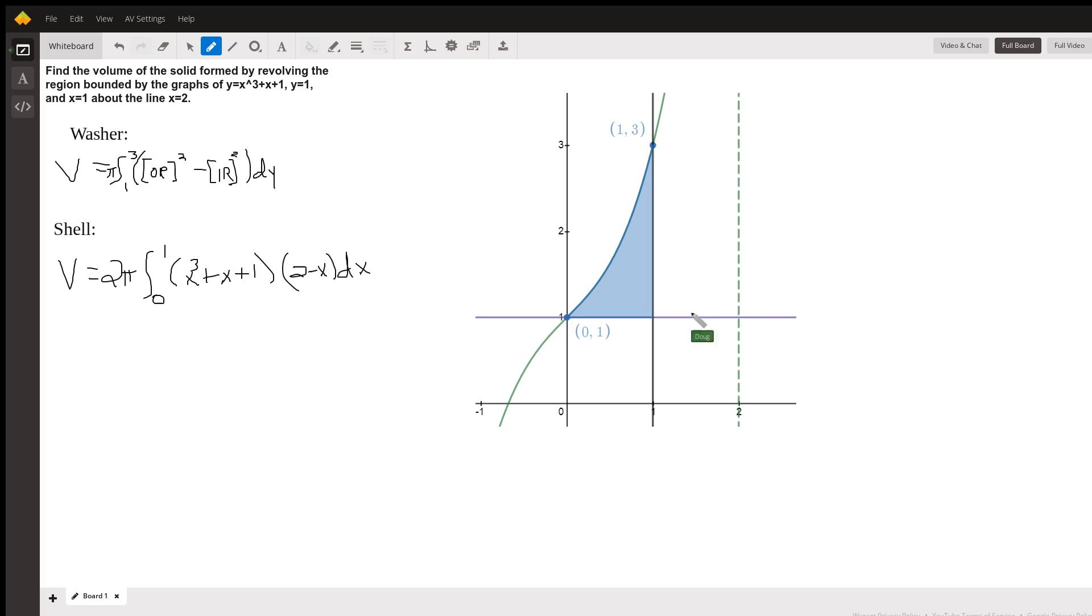The line y equals 1 and the line x equals 1. And we're going to revolve that region about the line x equals 2, this dashed green line.